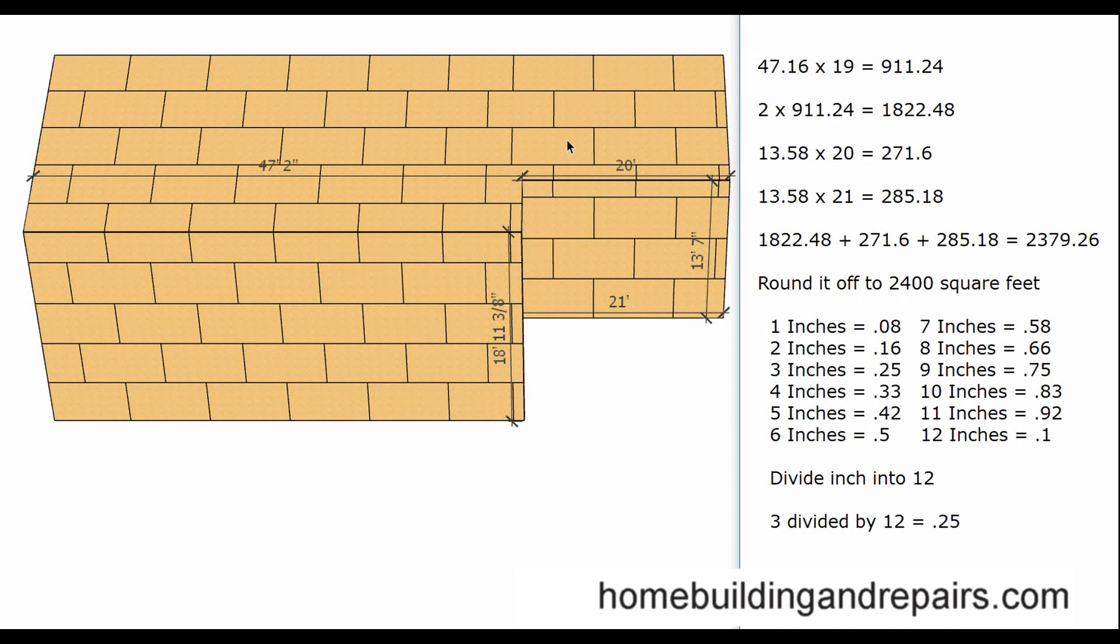1822.48 square feet. Next up on the list will be this section here, 20 foot, 20 foot, 13 foot, 7 inches. Remember this would be the same size over here, 13.58. How did we get this? Convert seven inches, simply went over to here, seven inches equals 0.58 of an inch. 13.58 times 20 gives us this, 13.58 times 21 gives us this amount here.